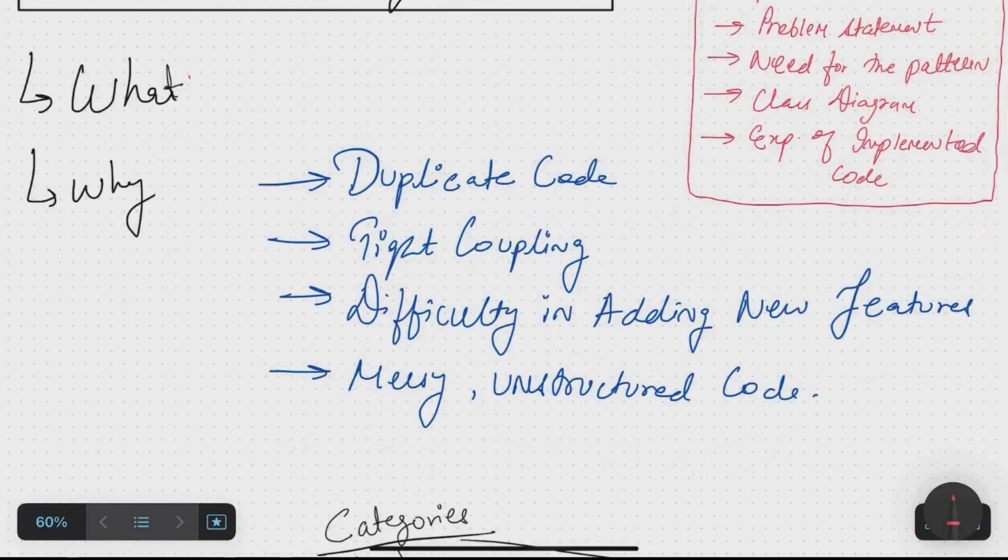Let's start with what exactly design patterns are. Basically, these design patterns are already existing proven solutions to common problems in software design. They provide a standardized approach to build systems that are scalable, maintainable, and reusable. Think of them as building blocks or a footprint architecture. They don't provide exact code but give us a structured way to solve specific problems effectively.